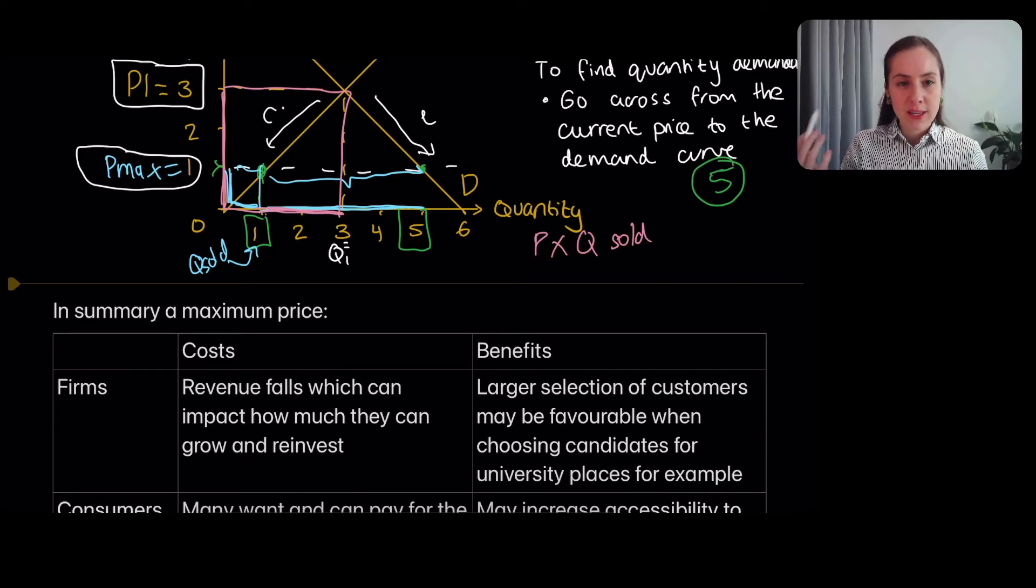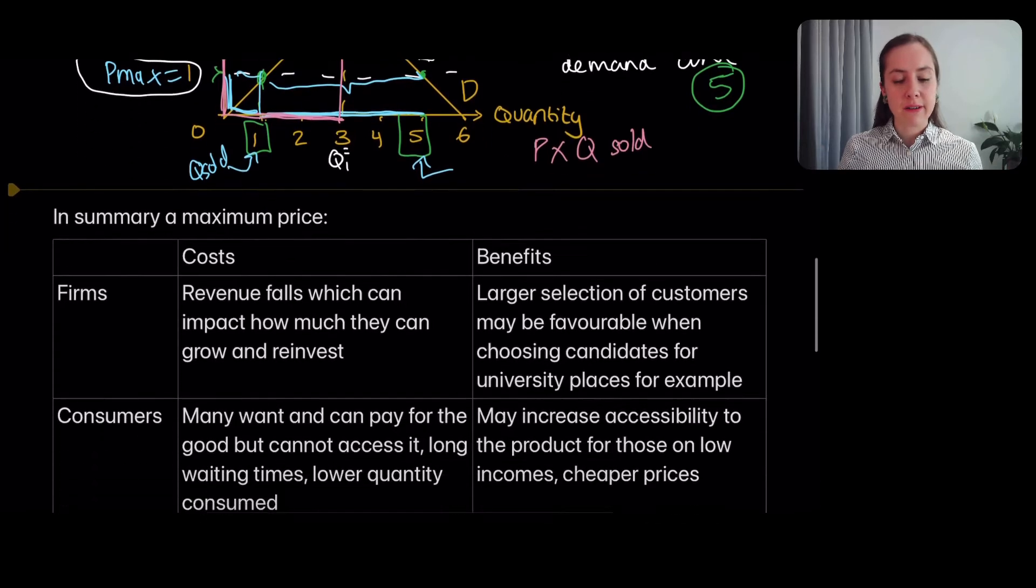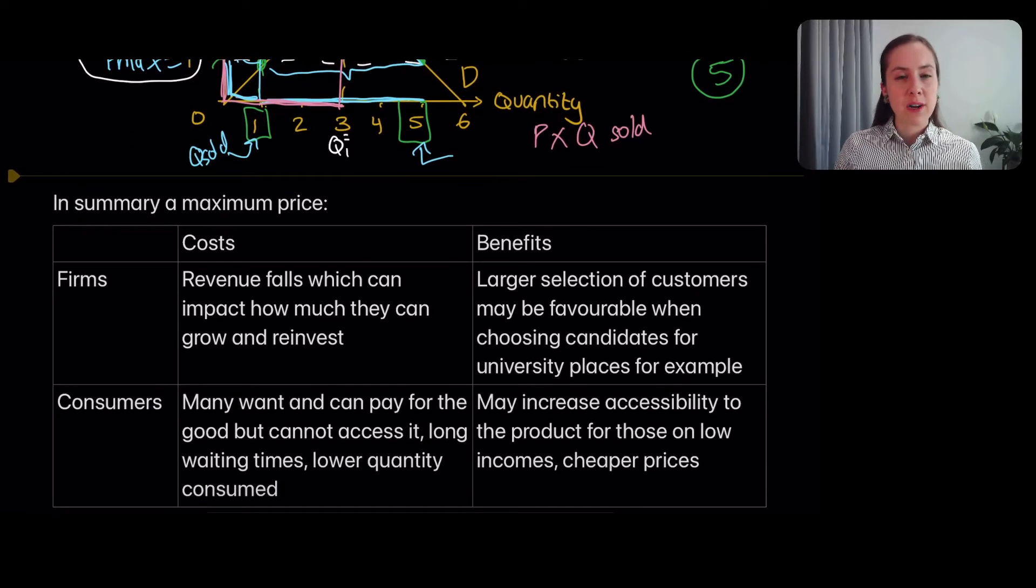Okay, but possibly one benefit is now they've got a lot of choice of customers. So we have five people applying trying to get this product, which is more than before. And maybe that gives the firm more choice in the context of university students, for example, to pick the ones that suit them best. They've got more of a choice that they didn't have before. Possibly that's a benefit.